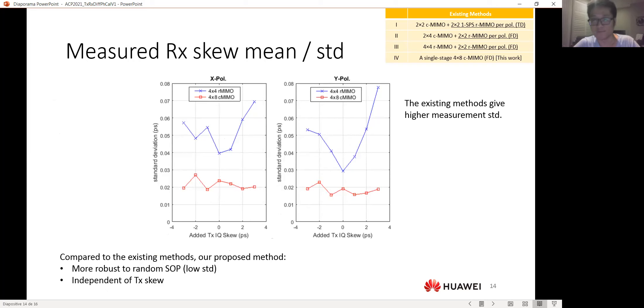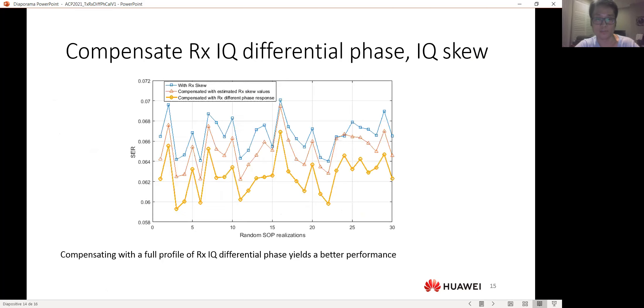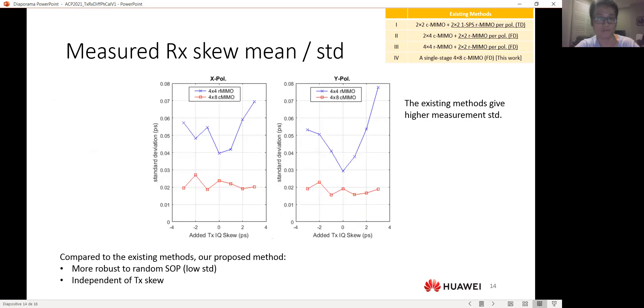Because of these fluctuations, the existing methods will give you a higher standard deviation when measuring the receiver skew. And compared to them, our proposed method seems to be very robust to random SOPs, which means we will have a lower error when measuring receiver skew. And also, our method is independent of the transmitter skew.